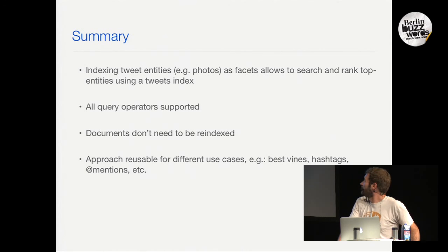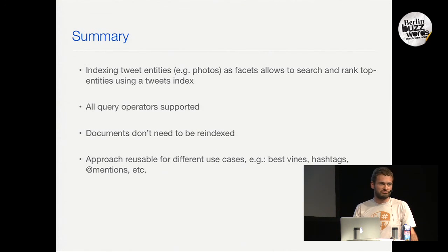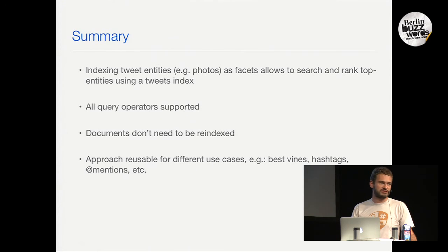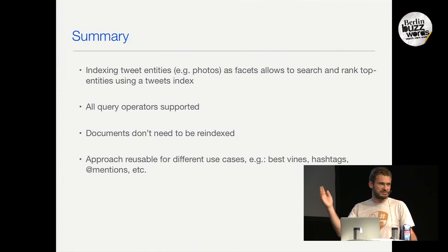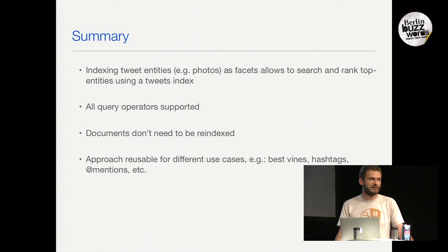In summary, indexing tweet entities allows us to search a tweet-centric index for other entity types. All query types are supported — for example, find the best photos in San Francisco from people I follow. Documents don't need to be reindexed and the approach is reusable for new entities like Vines, hashtags, mentions, and videos.